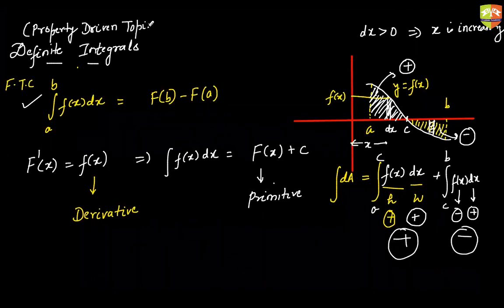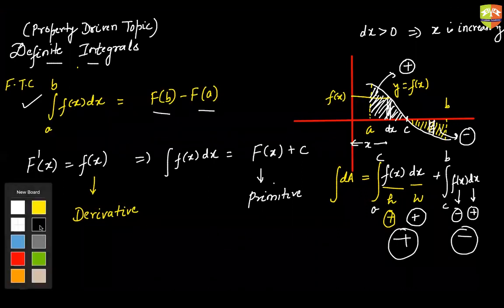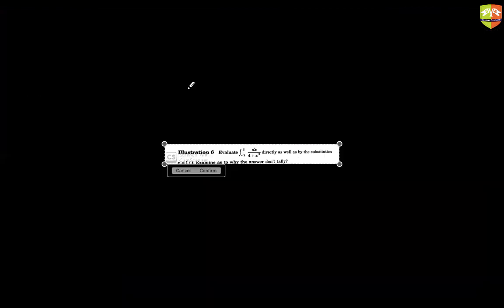I'm going to ask a few questions to test your understanding. When we say the integration of f(x) from A to B is F(b) minus F(a), here is a very strange question: evaluate this directly as well as by the substitution x = 1/t, and examine why the results do not tally.